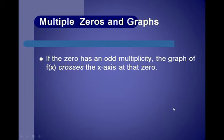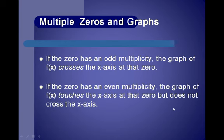Let's talk about zeros, their multiplicities, and what they look like on a graph. If a zero has an odd multiplicity, then the graph of f of x crosses the x-axis at that zero. If a zero has an even multiplicity, the graph of f of x touches the x-axis at that zero but does not cross it.